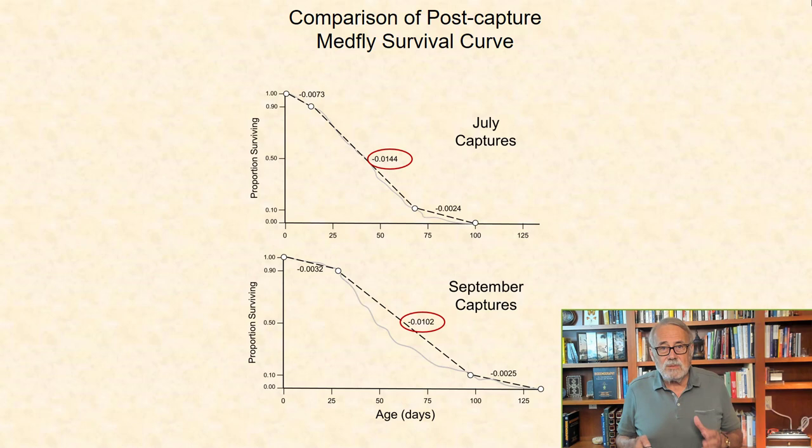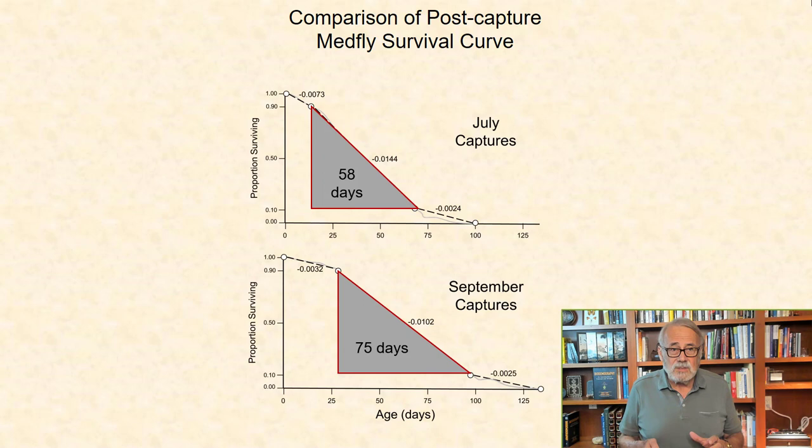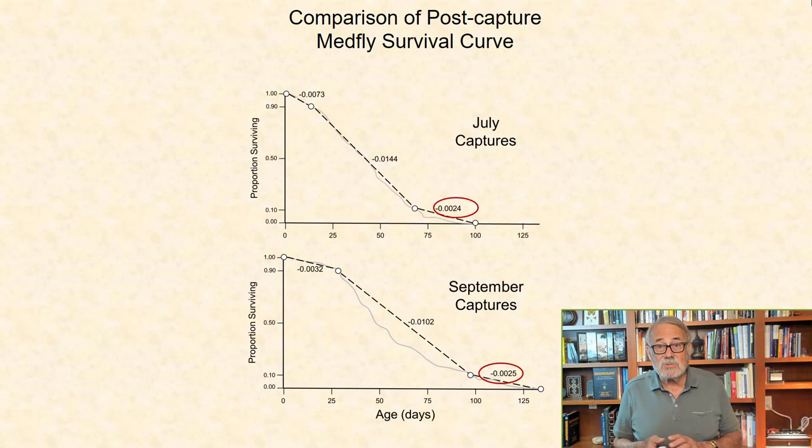For verticalization, there was nearly a 1.5-fold difference in the slopes of the post-capture survival curves between July versus September captures. The period that elapsed from 90% alive to 10% alive was 58 and 75 days for the July and September captures, respectively.